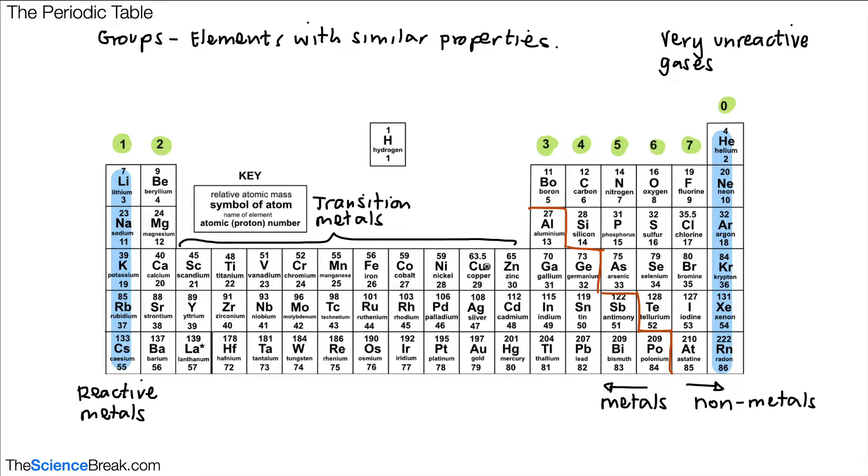However, there are some familiar elements here. We've got copper, zinc, iron, nickel, and also silver and gold, which I'm sure you've heard of. These are all found in the transition metal section of the periodic table.